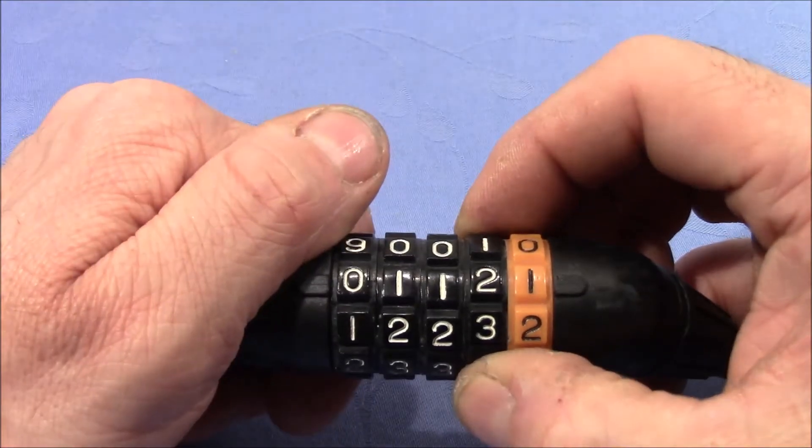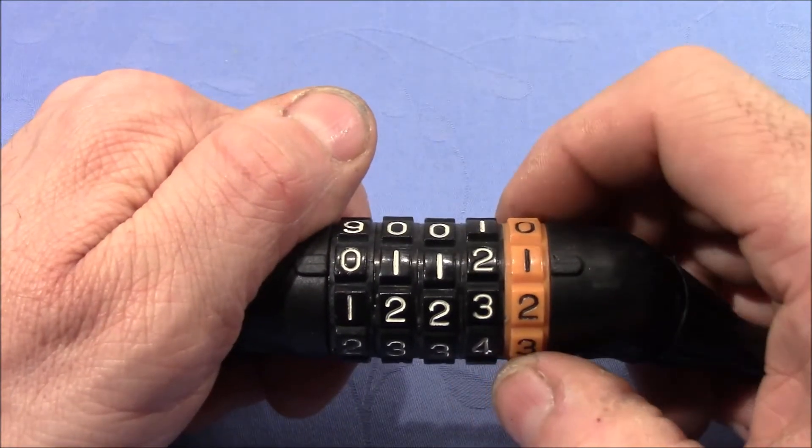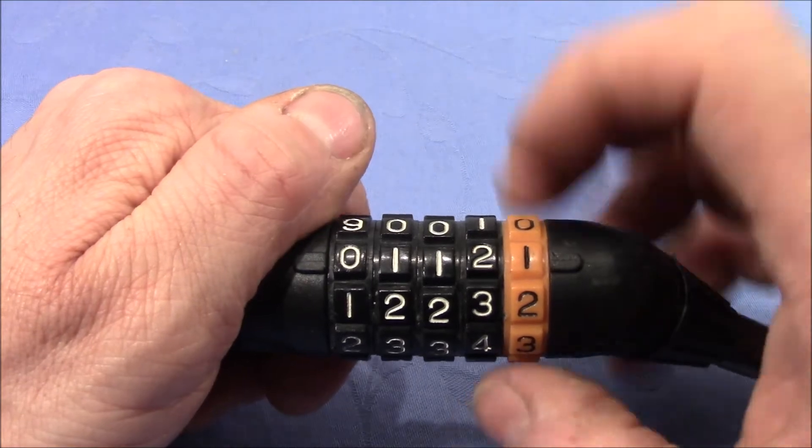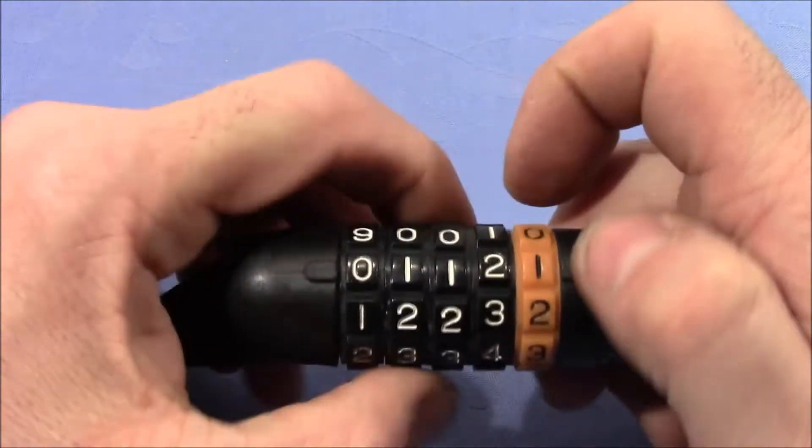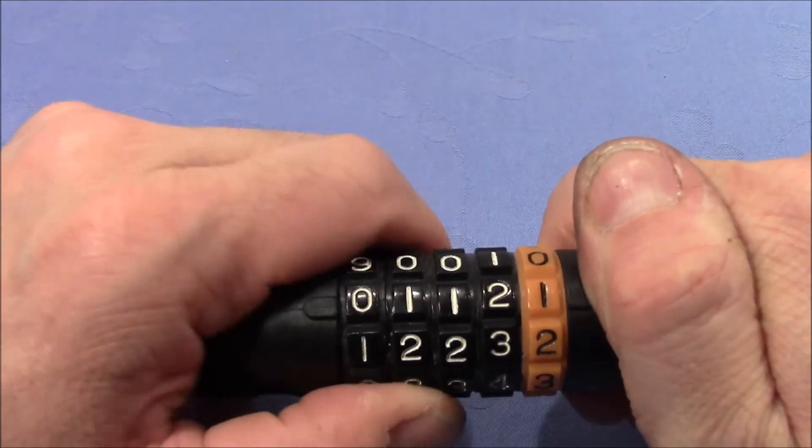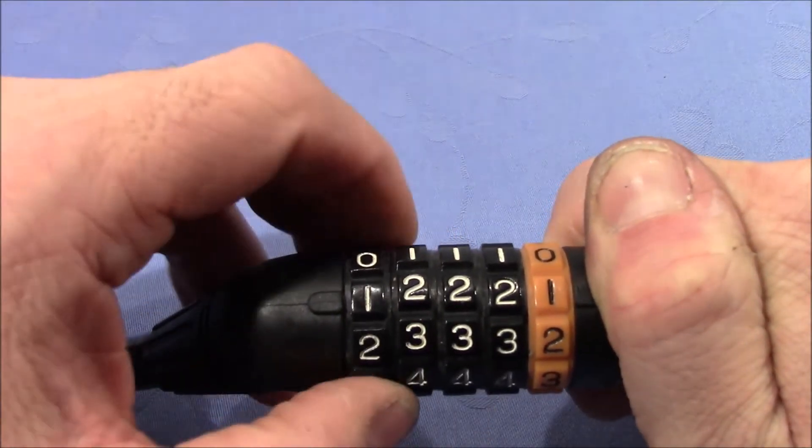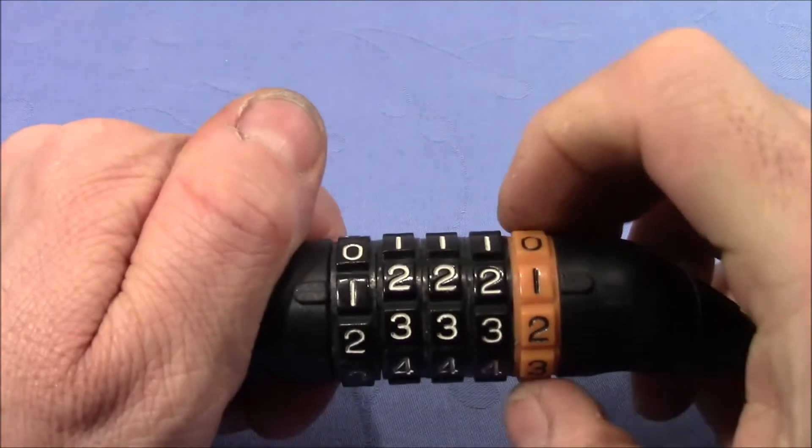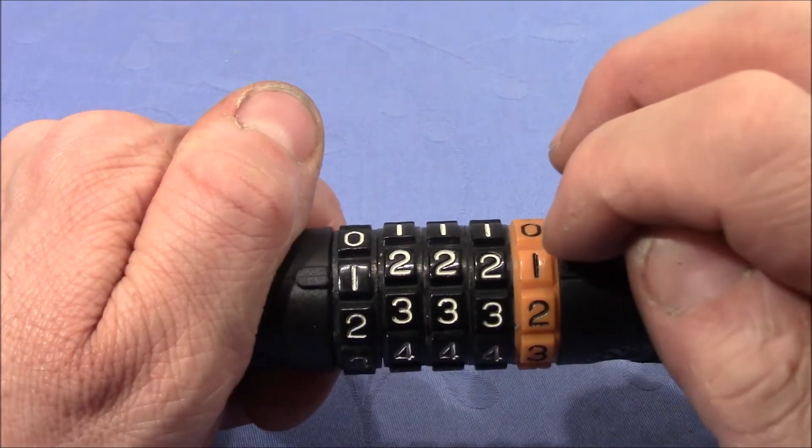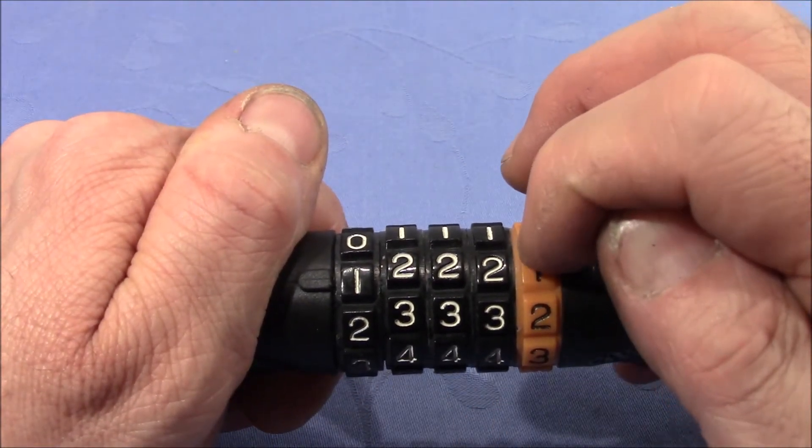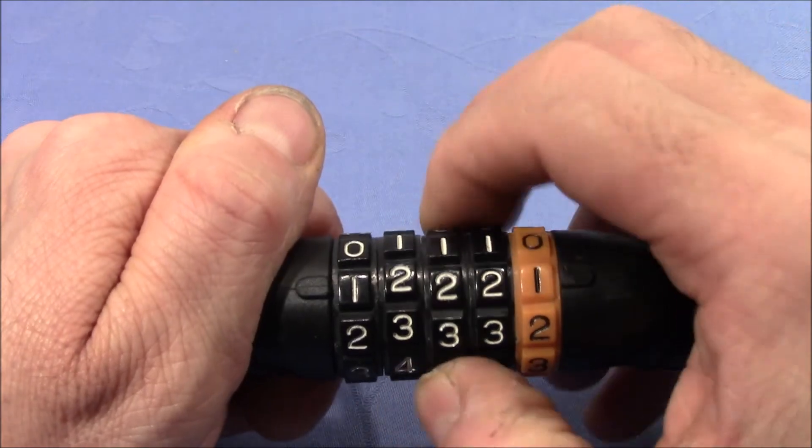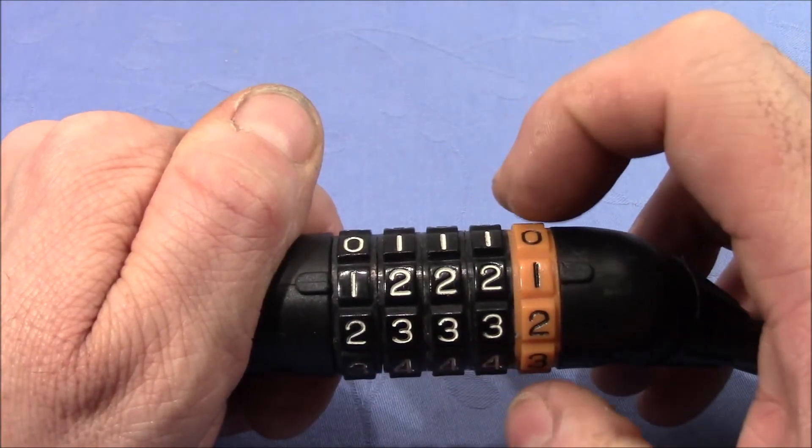But you can also use the indirect method if the direct method doesn't work. So maybe I can show this to you. Let's say I turn away these numbers and let's say I don't know which number on the first wheel is the right one.